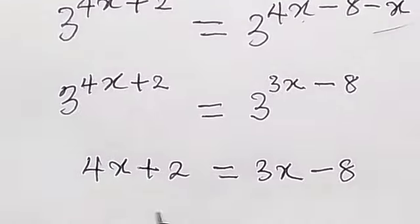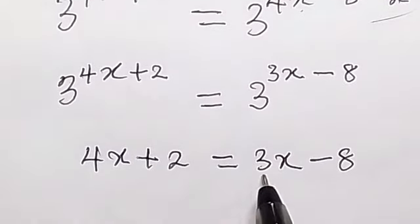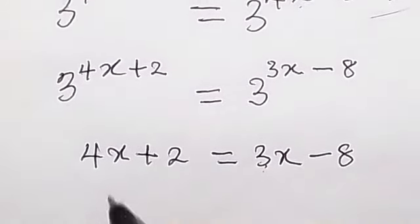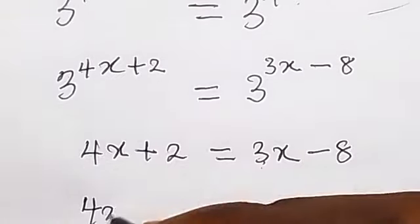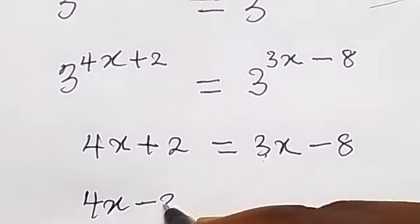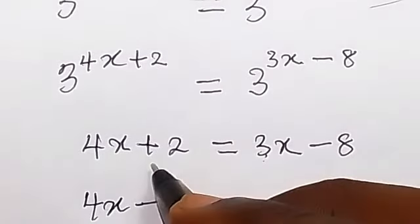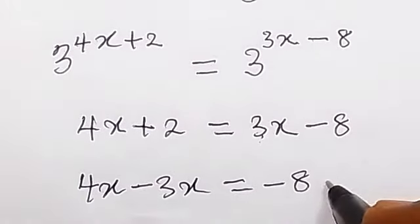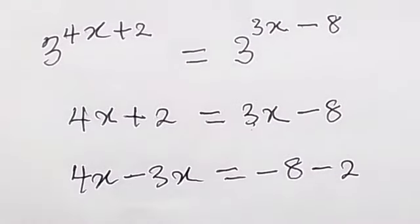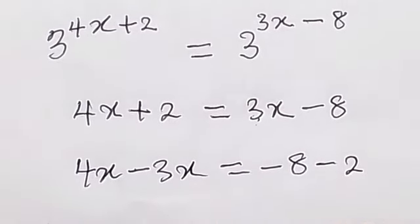And from there, by the time we collect the like terms, we can take 3x here, so that will be 4x minus 3x equals to minus 8, left here, then take plus 2 there, that will be minus 2.